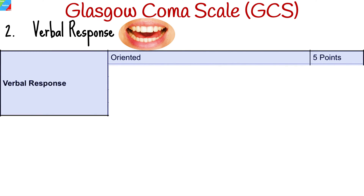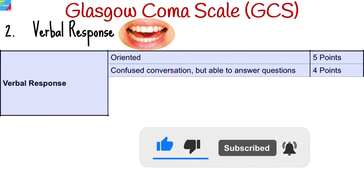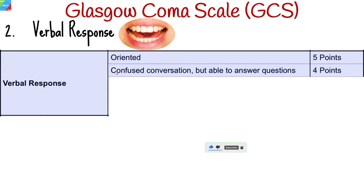For verbal response, the highest points that can be scored is 5 points. Begin by engaging the patient in conversation and assess if they are orientated. If the patient is oriented to time, place, and person, the score awarded is 5 points. If the patient's response is confused conversation, the score awarded is 4 points.